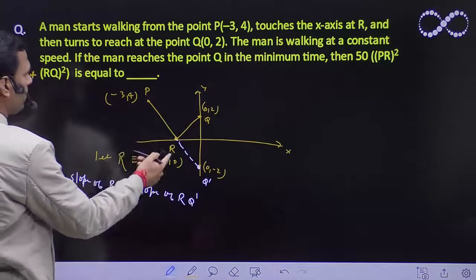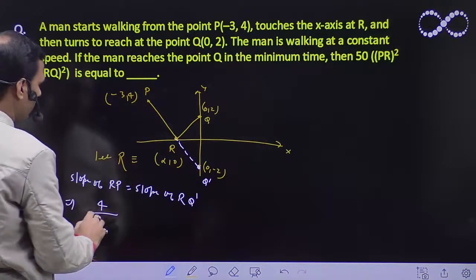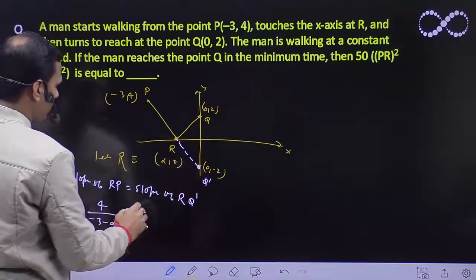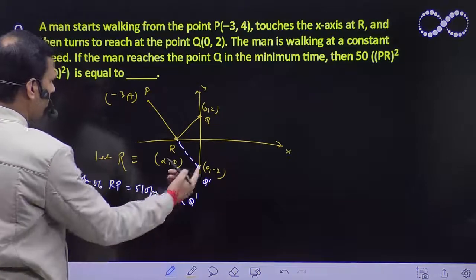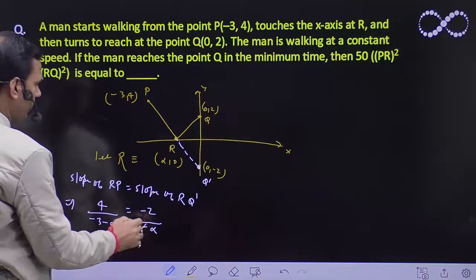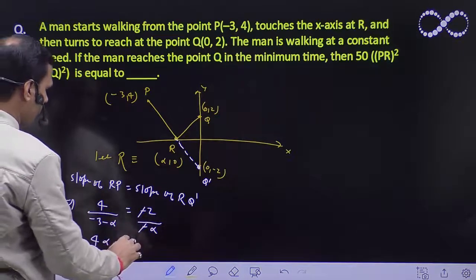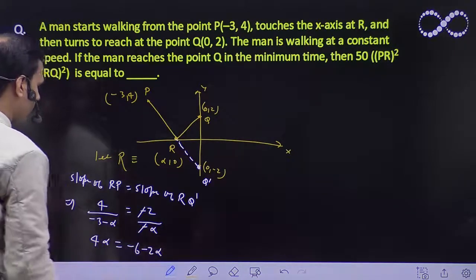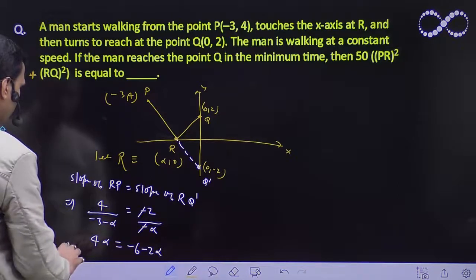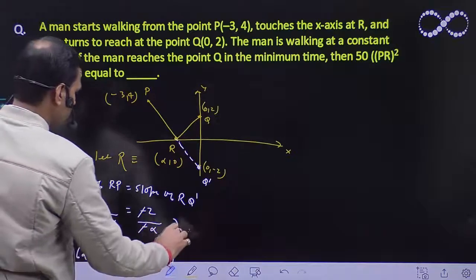Slope of RP is (4 - 0)/(-3 - α) equals (-2 - 0)/(0 - α). Negative cancels, so 4α equals -6 - 2α. Bring this over: 6α equals -6, so α equals -1.